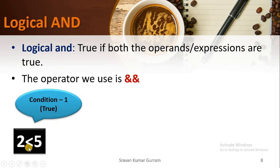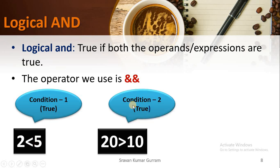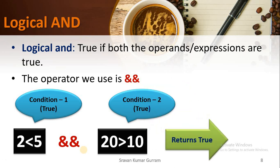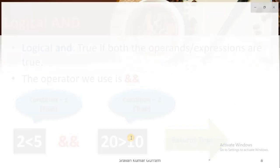For better understanding, consider this example. Suppose we have one condition: 2 less than 5 — this returns true. We have one more condition: 20 greater than 10 — this is also true. When both given conditions are true and you combine them with logical AND, it returns true, because the nature of logical AND is that it returns true only if both conditions are true.